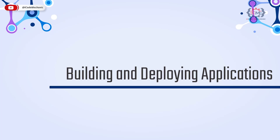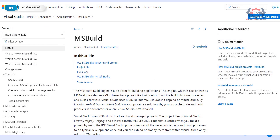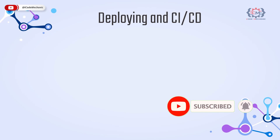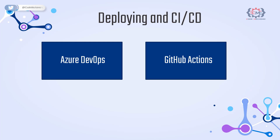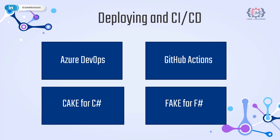Building and deploying applications — coding is only part of the battle; there are many other things required like build, compile and deploy. The Microsoft Build Engine or MSBuild is the platform used for building applications. When you build in Visual Studio, it uses MSBuild, but MSBuild does not need Visual Studio, which allows us to decouple the build process and automate deployments. MSBuild can be used in Azure Pipelines for continuous integration and continuous delivery. Other tools include GitHub Actions, Cake for C# and Fake for F#.